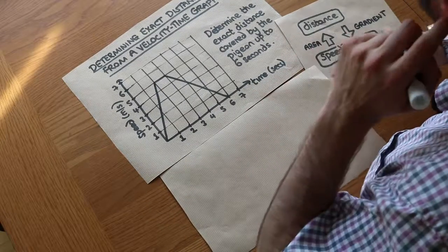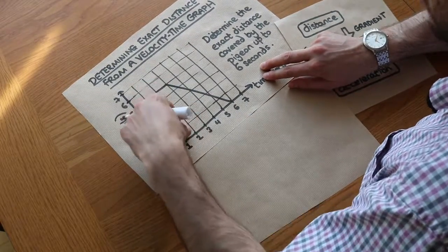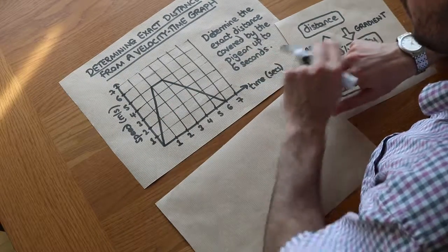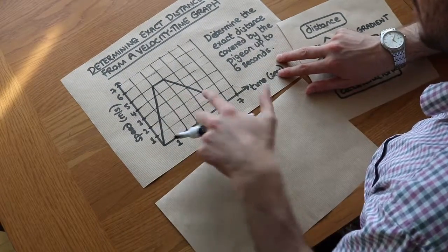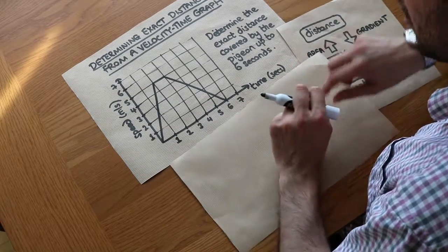Now there's two ways we can do it. We could either split it up like this into a rectangle and two triangles, or we could actually just find the area of this trapezium because we've got a pair of parallel sides. So let's do it that way.